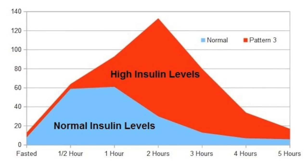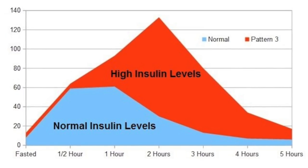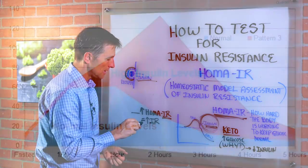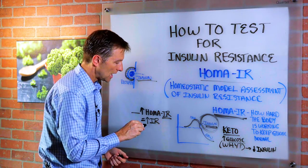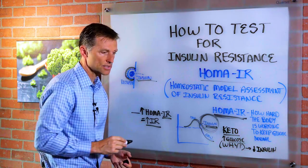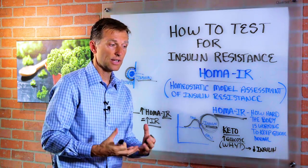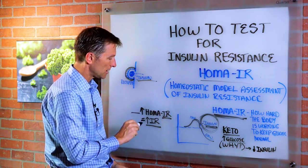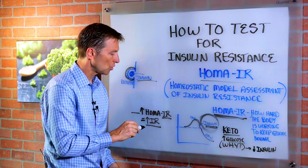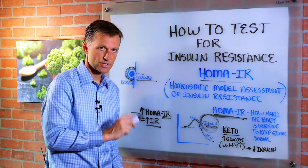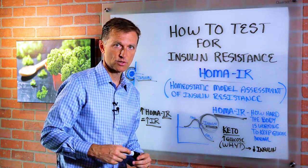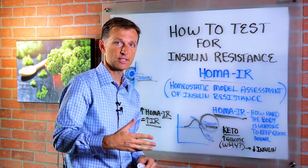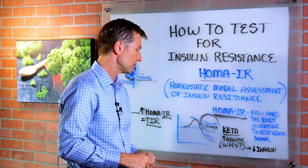When you have high HOMA-IR, that equals high levels of insulin resistance — you have a lot of insulin resistance. If you have low HOMA-IR, that means you have low insulin resistance, so you have insulin sensitivity. It's working and improved.